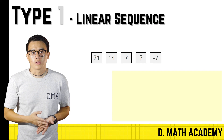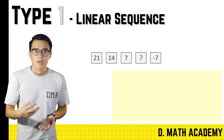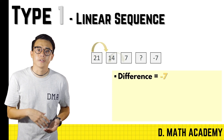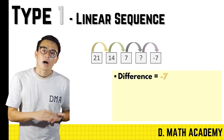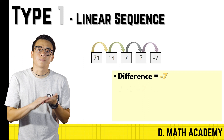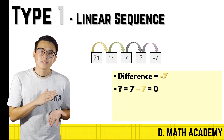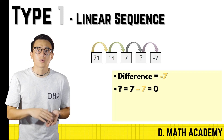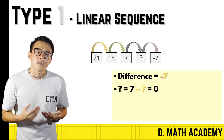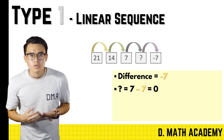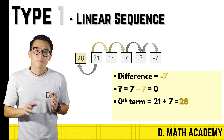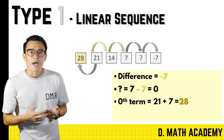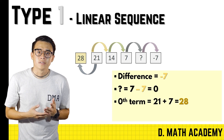For the first example we have 21, 7, unknown, and negative seven. The term-by-term difference is negative seven. To identify the unknown, simply take the previous term, which is seven, and subtract seven — you get zero. To find the zero term, work backwards from 21 by adding seven, which gives you 28.